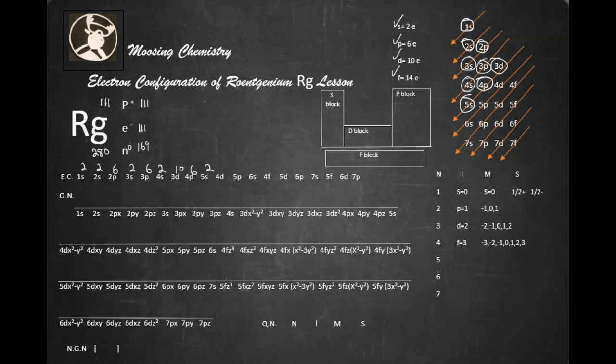Alright, 5s2, 4d10, 5p6, 6s2, 4f14, 5d10, 6p6. And 7s2. Okay, looks like we're back on target.